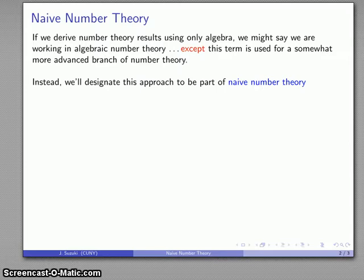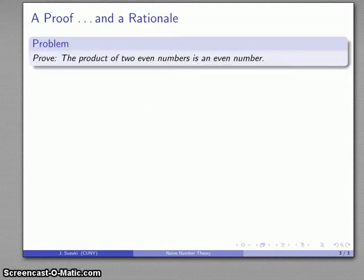Instead, we'll define this type of number theory where we derive results using only algebra. It's frequently called naive number theory, and we'll take a look at an example of something very simple here and a rationale for why you'd even bother to prove anything.